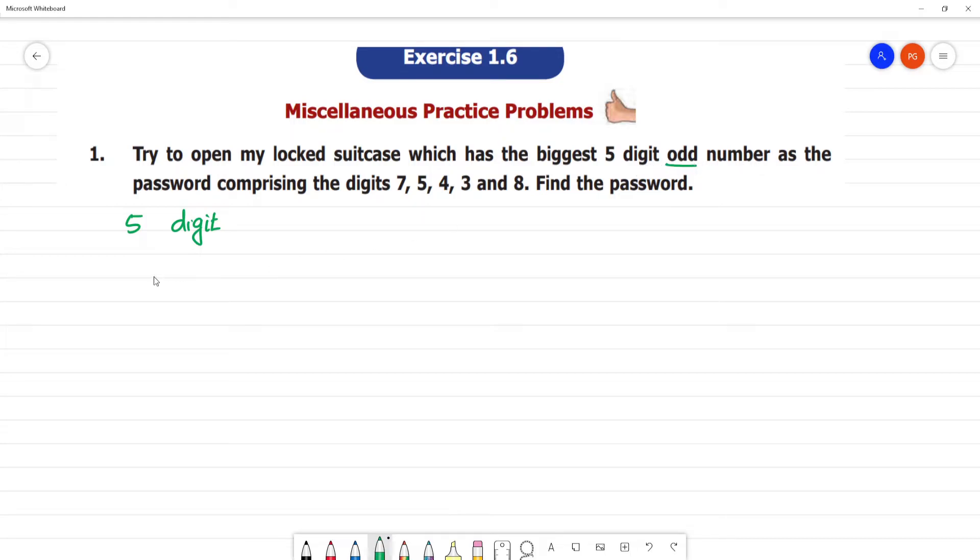5-digit odd number. For an odd number, the last digit must be an odd digit, which ends in 1, 3, 5, 7. So in this manner, we need to think which is the biggest number we can make. For the biggest number, how should we arrange it?